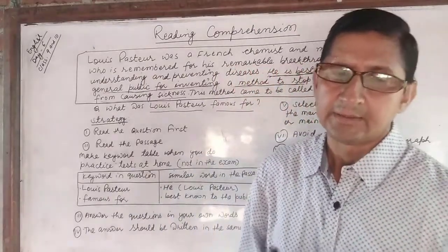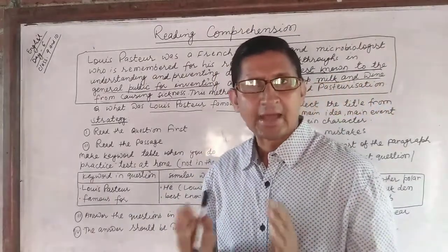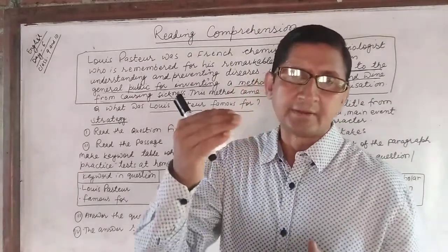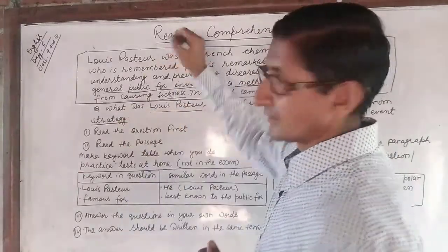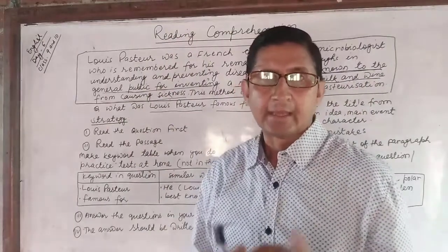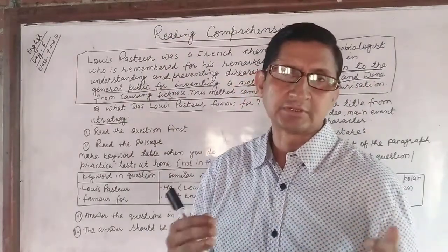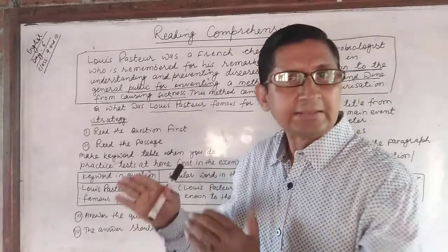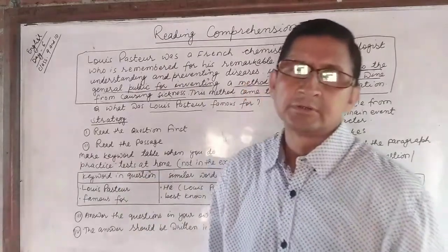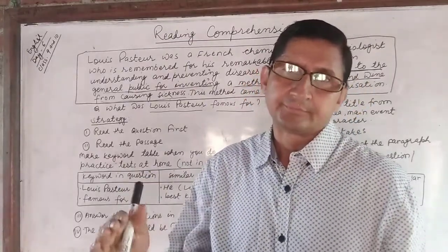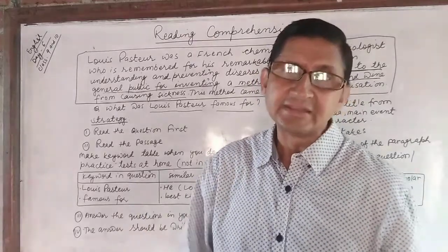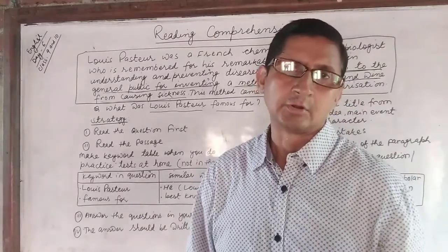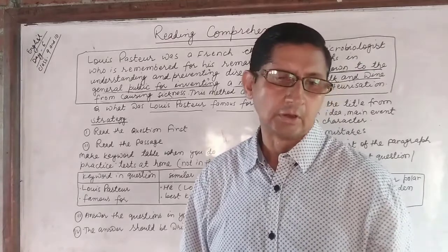In chronological order, the answer of question number one appears in the beginning part of the passage, and the answers to questions two, three, four, five appear in the later portions of the passage in serial order.